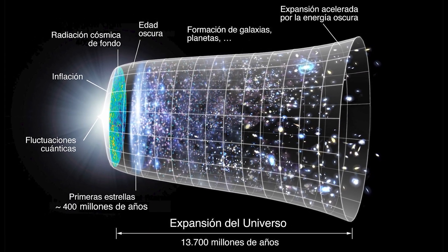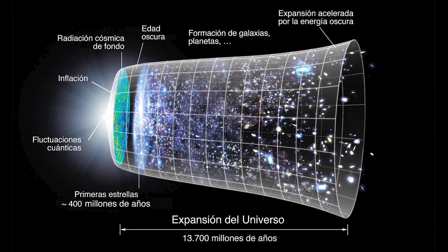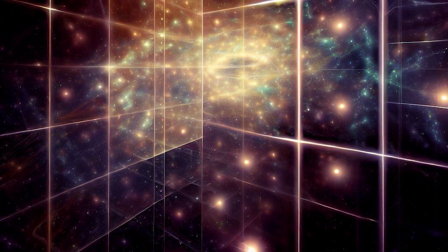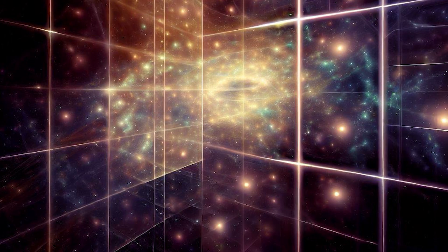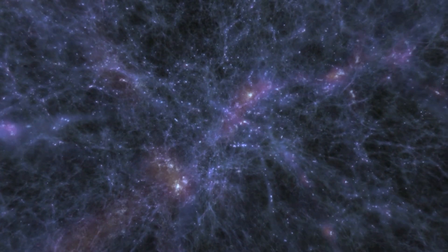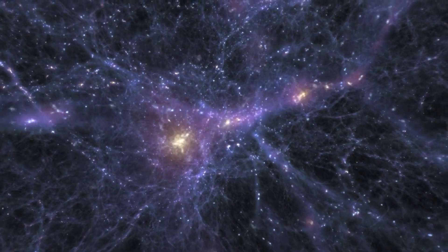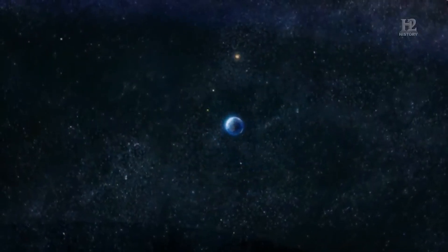As it expanded, matter was clumped together by gravity, forming stars, galaxies, and eventually planets like Earth. Over time, these structures became larger and more complex, creating the diversity of objects and phenomena we see in the universe today.